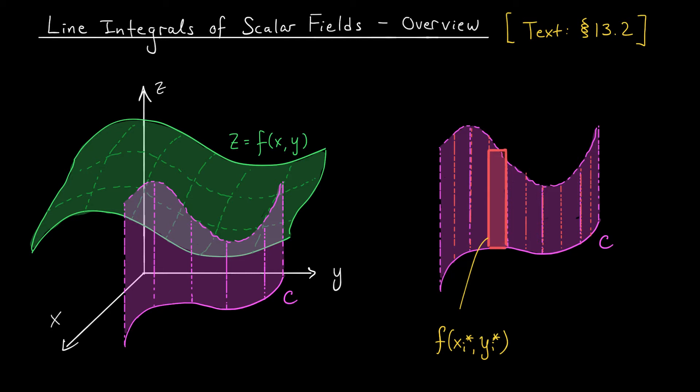Now, back in Calc 2, that change in width was called delta x, right? It represented a tiny change in the x direction. But now, we're not just moving in the x direction. We're moving along this path. So our tiny change is really a tiny change in arc length, right? It's delta s_i. S is commonly used to denote arc length. So there you go.